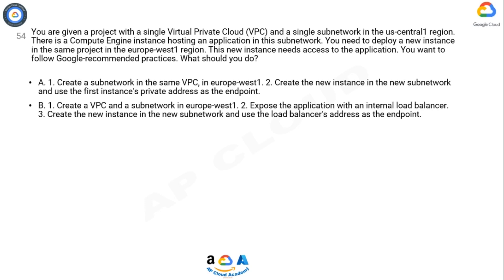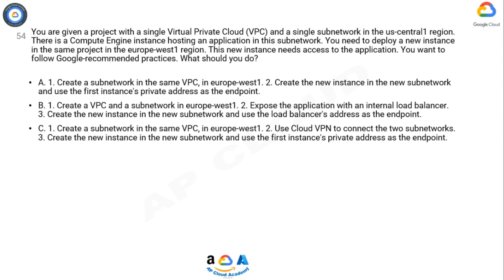Option B: 1) Create a VPC and a subnetwork in europe-west1. 2) Expose the application with an internal load balancer. 3) Create the new instance in the new subnetwork and use the load balancer's address as the endpoint. Option C: 1) Create a subnetwork in the same VPC in europe-west1. 2) Use Cloud VPN to connect the two subnetworks. 3) Create the new instance in the new subnetwork and use the first instance's private address as the endpoint.